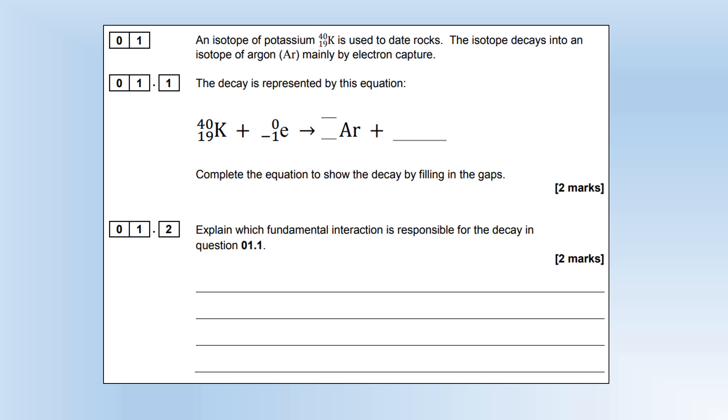We can see this in the equation with some blanks in it, so we want to complete the equation first. In electron capture, a proton turns into a neutron by capturing an electron, so the proton number goes down but the nucleon number stays the same. To conserve lepton number, we produce an electron neutrino. This is a form of decay, which means it's the weak interaction, and an up quark is changing into a down quark as the proton captures the electron.